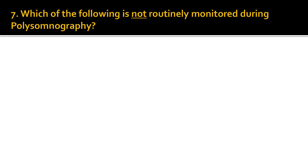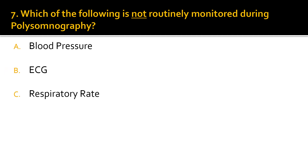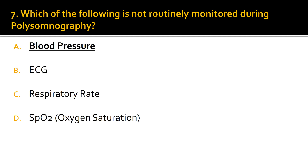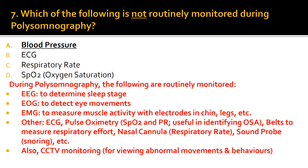Question 7. Which of the following is not routinely monitored during polysomnography? Is it blood pressure, ECG, respiratory rate, or SpO2? The correct answer is A: blood pressure. Blood pressure is not routinely monitored during polysomnography. In this slide I have listed the parameters that are routinely monitored. Those who are interested can pause and note down the details.